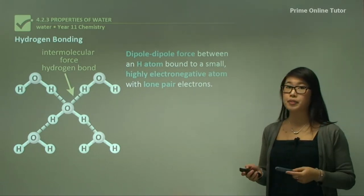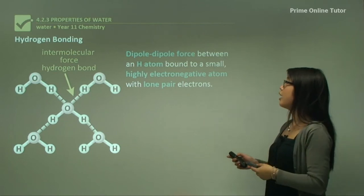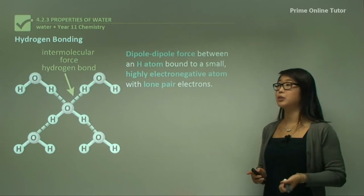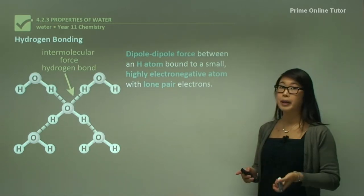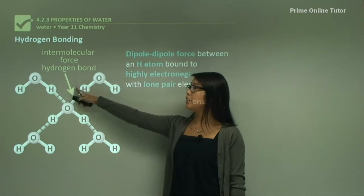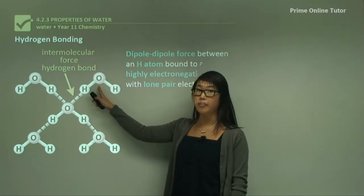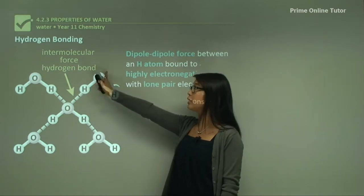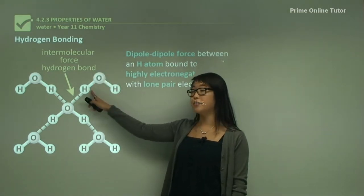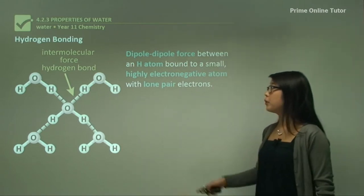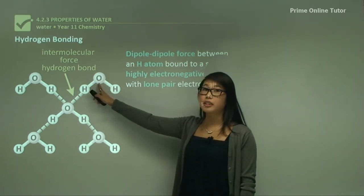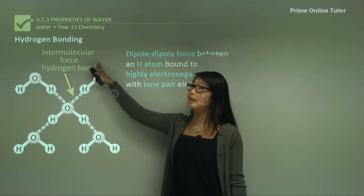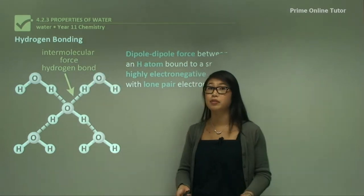Hydrogen bonding is a specific type of dipole-dipole interaction. A dipole-dipole force involves a hydrogen atom bound to a small, highly electronegative atom with lone pairs. We know that hydrogen here is bound to a highly electronegative oxygen. Oxygen is going to pull the electrons closer to it compared to the hydrogen, giving a slight negative charge on the oxygen side and a slight positive charge on the hydrogen side. Oxygen also has two sets of lone pairs, making it negative both due to electronegativity and lone pairs.